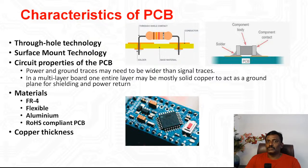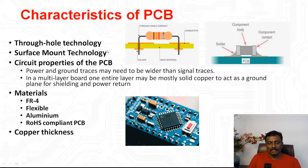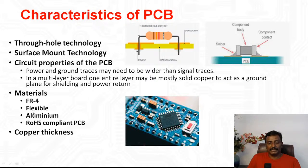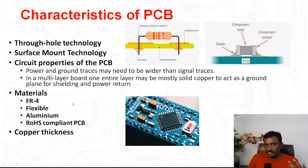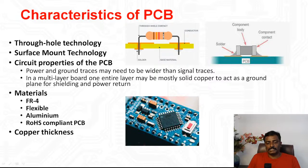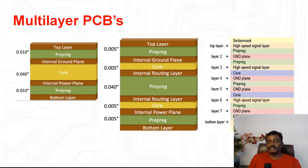Coming to the characteristics of PCBs: you have through-hole technology where you insert a lead through a plated hole and solder it. Surface mount technology is where you place components on the top of the PCB without making a drill. Circuit properties include materials like FR4, flexible material, and aluminum material. ROHS stands for Reduction of Hazardous Substances — the UK, US, and European Union use only lead-free PCBs since lead is a hazardous substance. You can purchase lead-free PCBs but they are more costly. These are the characteristics of PCB.